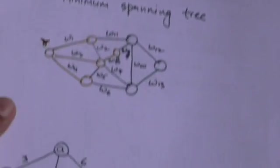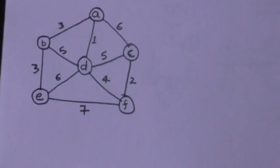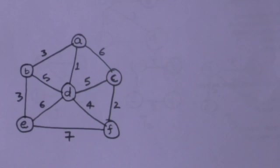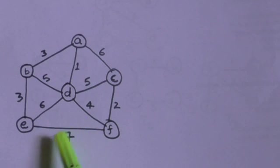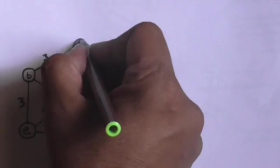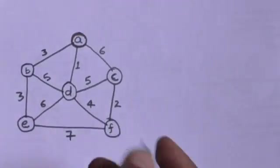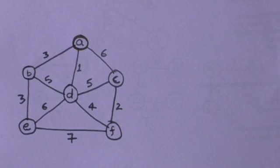It will be more clear after this example. Now consider this graph — suppose we have to find the minimum spanning tree of this graph by using Prim's algorithm. Now suppose in this graph we have chosen the vertex A to start. Here we have chosen this vertex A to start.